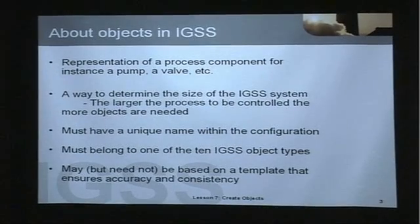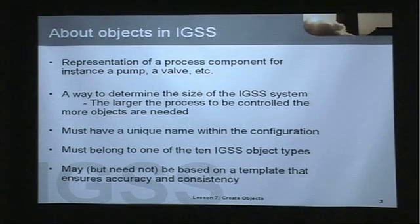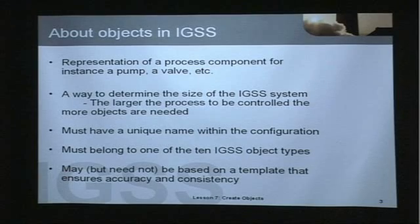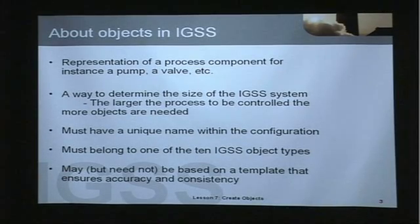An object is a representation of a process component — for instance, a pump, a valve, etc. It's also the way to determine the size of the IGSS system. The larger the process to be controlled, the more objects are needed.